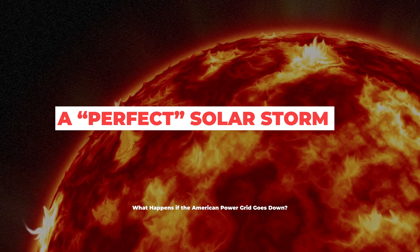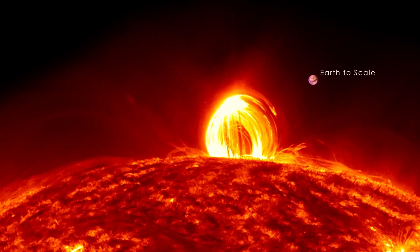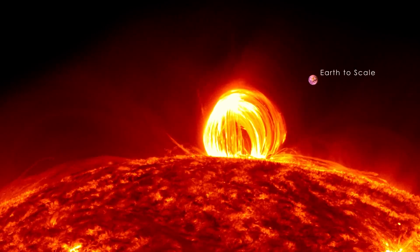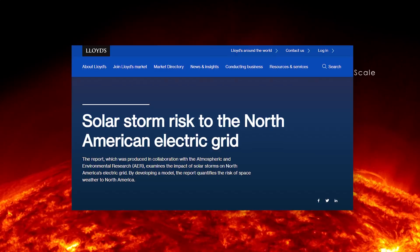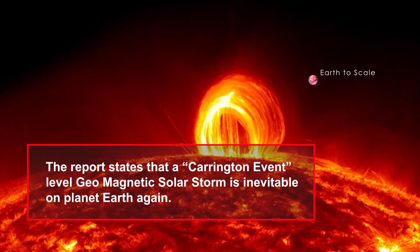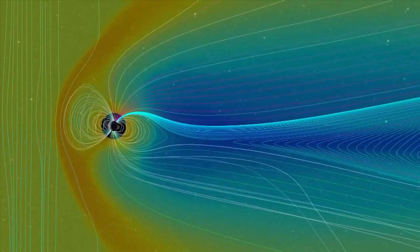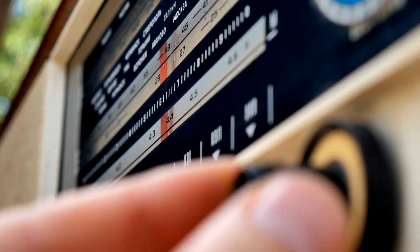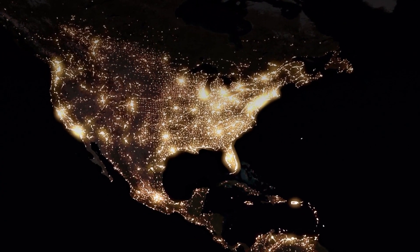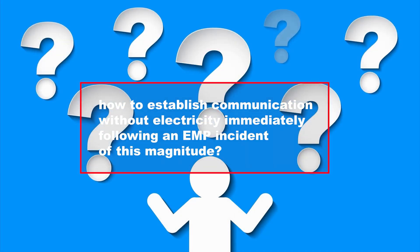In 2013, Lloyd's, the world's leading insurance marketplace, put out a solar storm risk to the North American Electric Grid report. The report states that a Carrington event-level geomagnetic solar storm is inevitable on planet Earth again. The Carrington event was the most intense geomagnetic storm in recorded history, probably due to a coronal mass ejection from the sun. If it happened today, it could severely damage satellites, disable telephone, radio, and TV, and cause electrical blackouts over whole continents. Does the question arise how to establish communication without electricity immediately following an EMP incident of this magnitude?